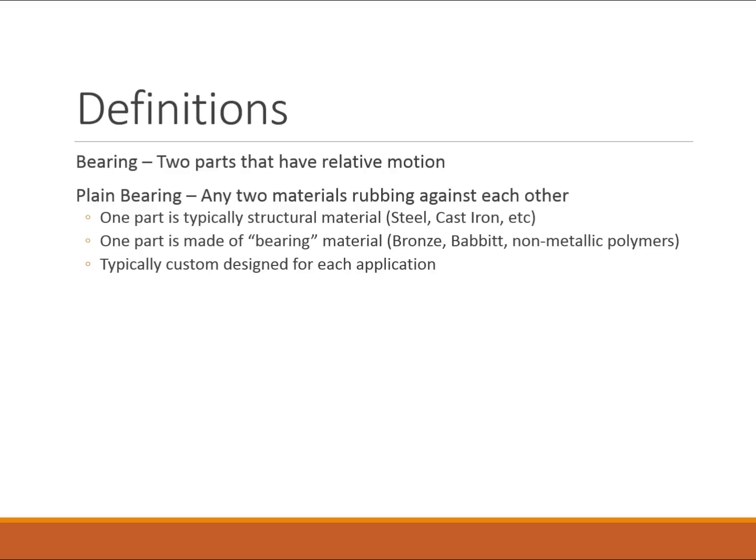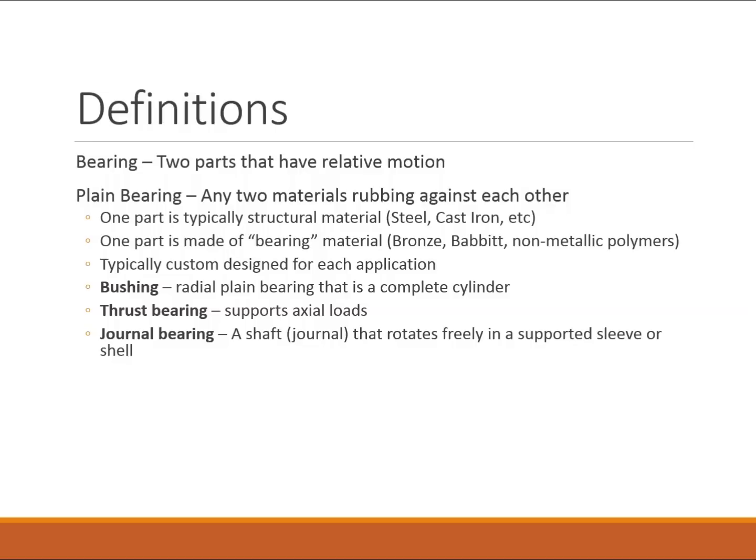Plane bearings are typically custom designed for each individual application. Within the plane bearing category there are bushings, which are radial plane bearings — they only allow rotational motion and are a complete closed cylinder.